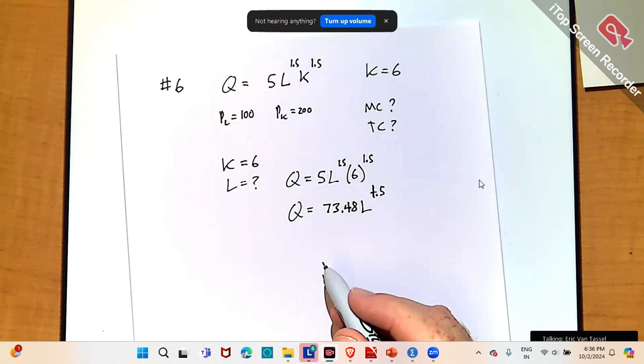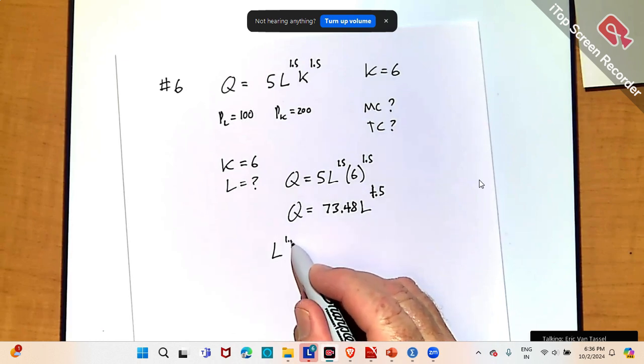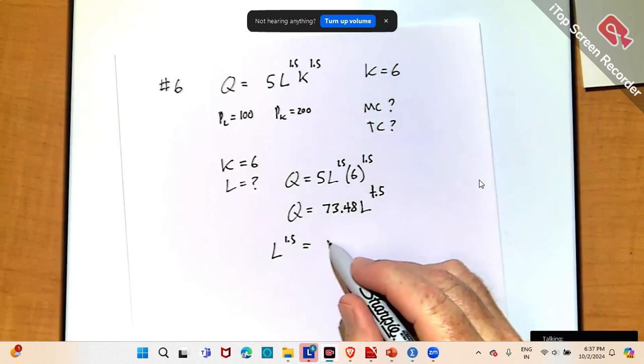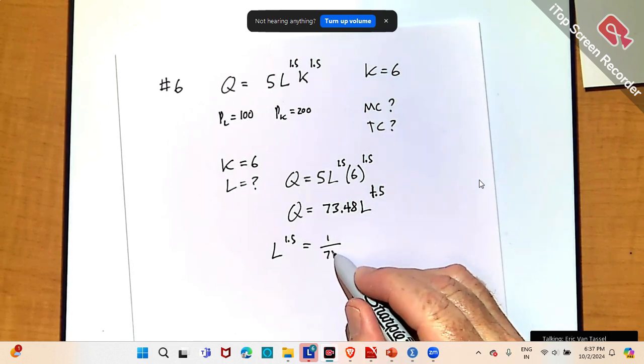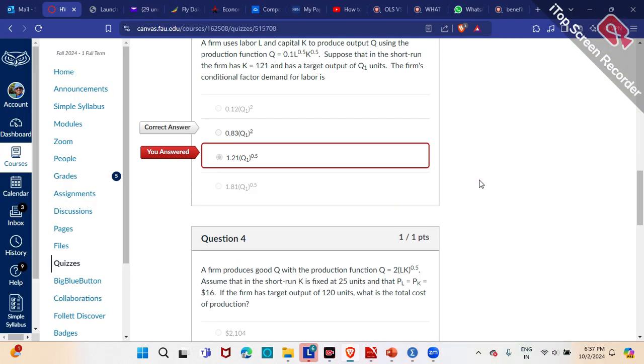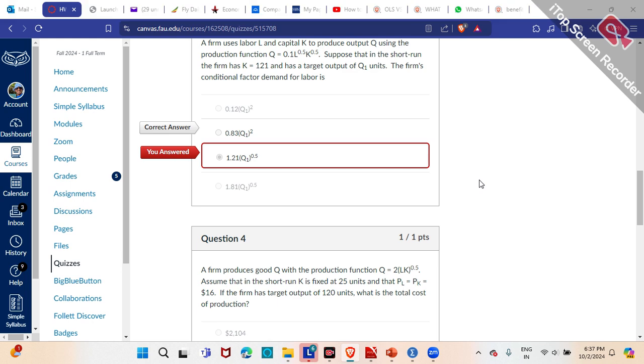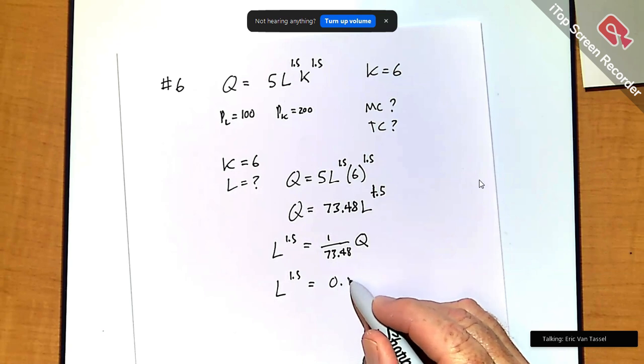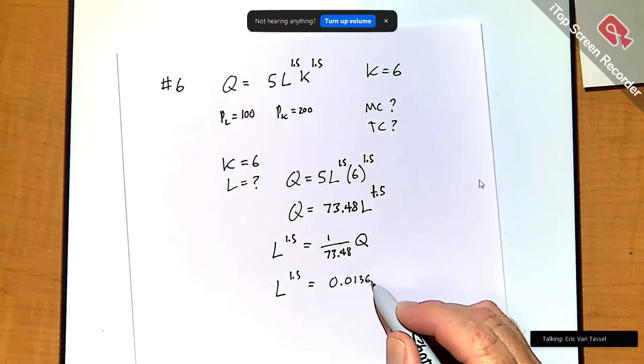Divide both sides by that. So L to the 1.5 equals Q over 73.48, right? Or L to the 1.5 equals, and then if I flip that around, something like 0.0136 Q.